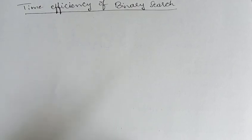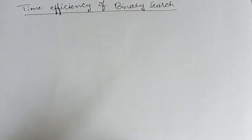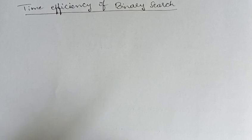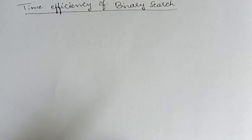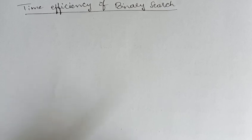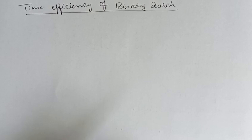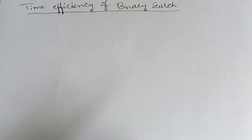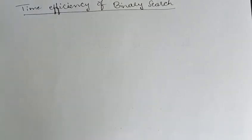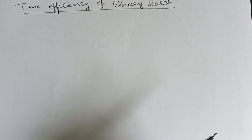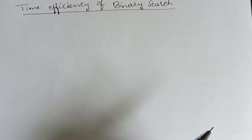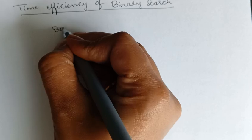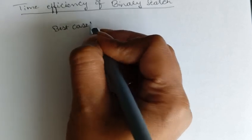Hello everyone. In the last video we have seen the binary search recursive algorithm. In this video I am going to explain the time efficiency of binary search algorithm. There is a best case and a worst case. Best case efficiency means if the key element is present at the beginning — that is, the first element itself is the key element — then that is the best case efficiency of binary search algorithm.